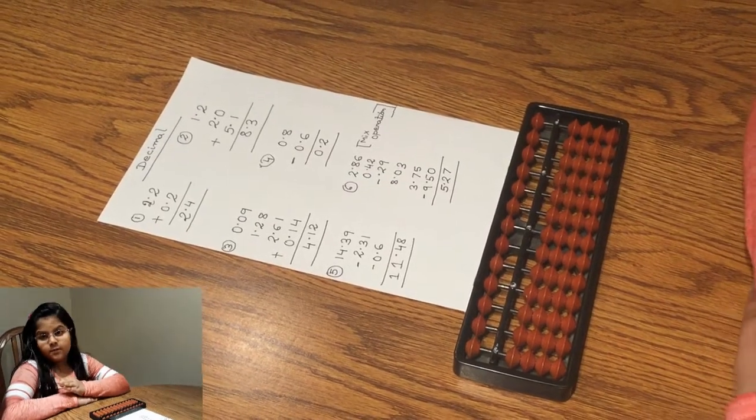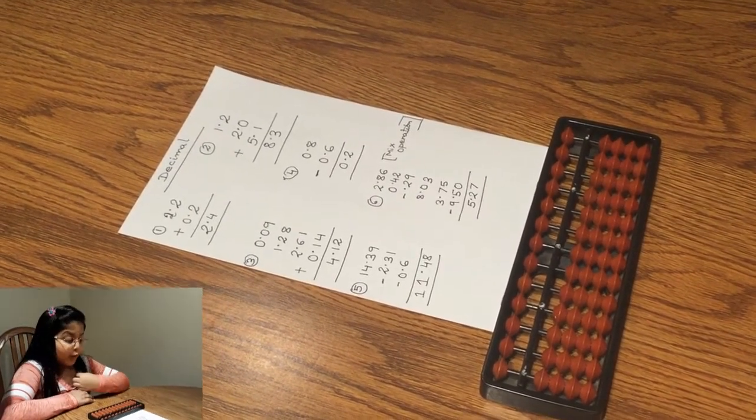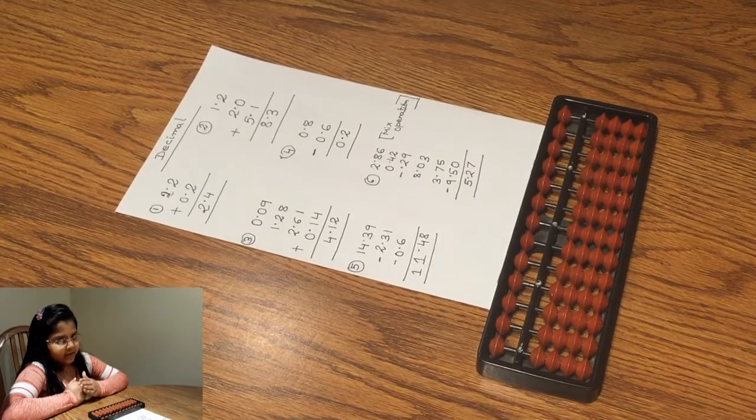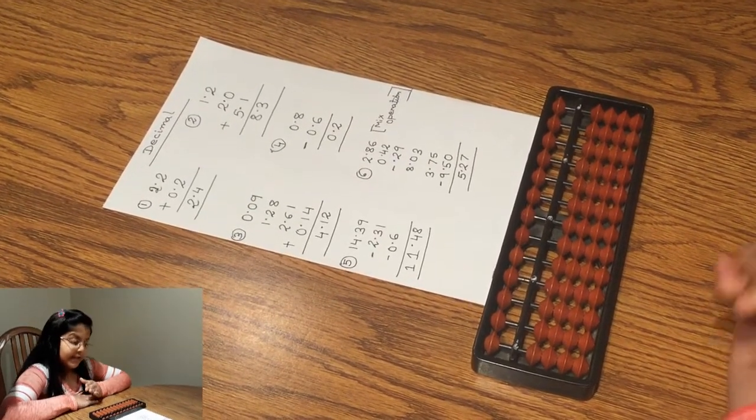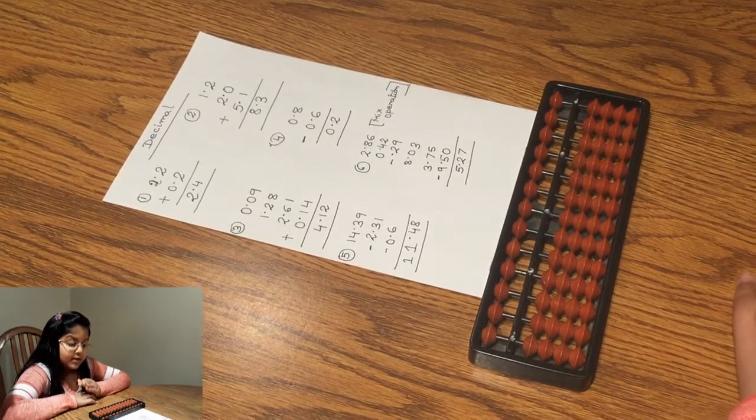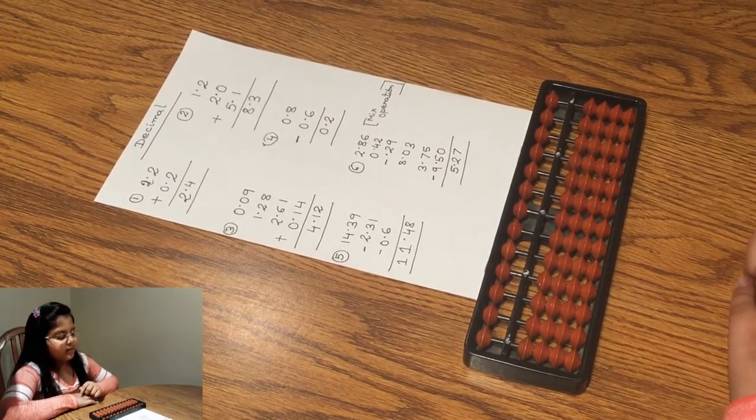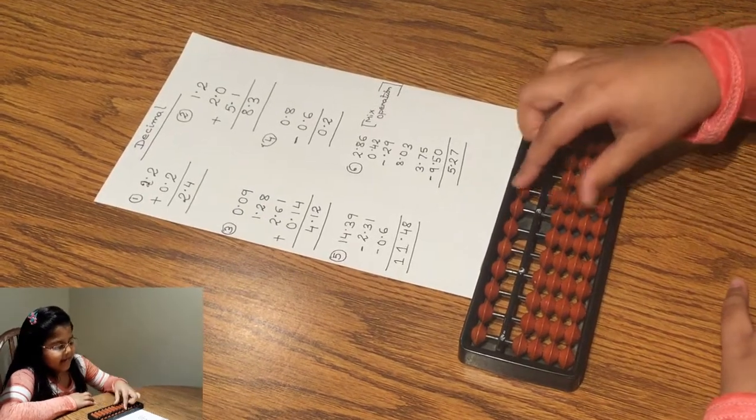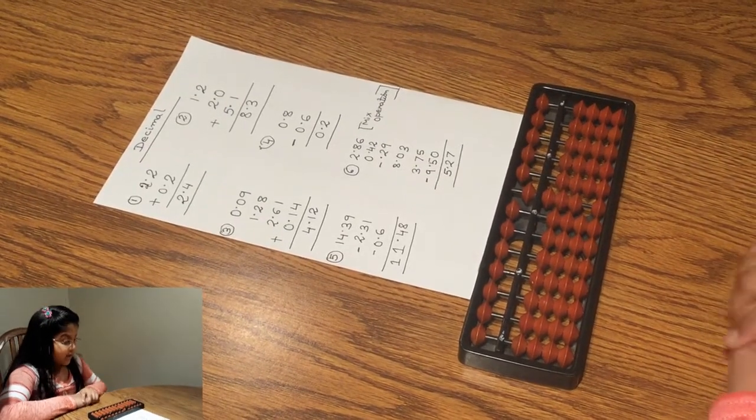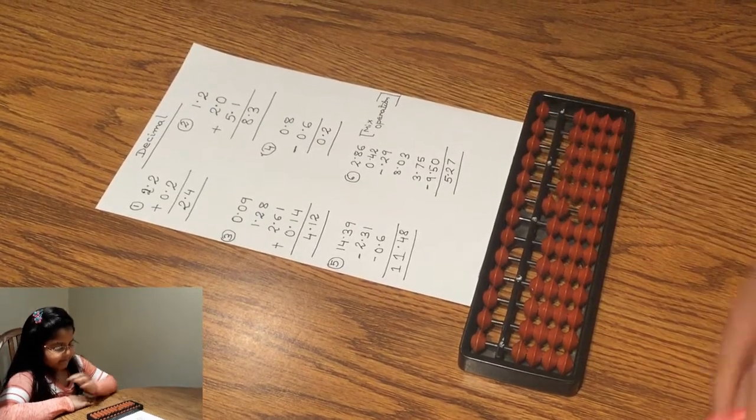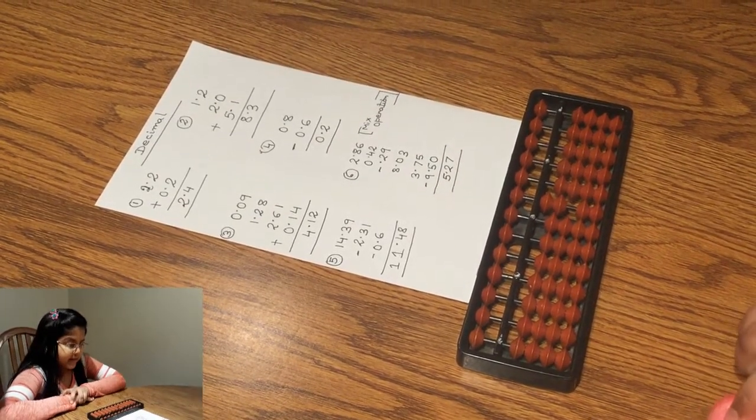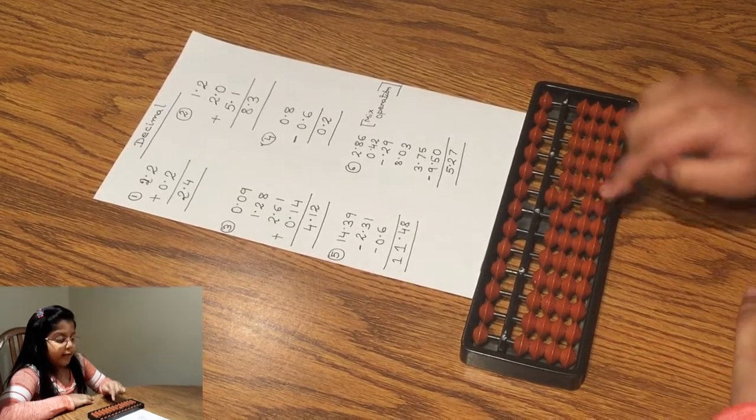Let's keep trying decimal problems, but we'll be doing subtraction instead of addition. Let's try 0.8 minus 0.6. First, I'll place 0.8 on my abacus. Then, I subtract 0.6 from it, which gives us the answer of 0.2.